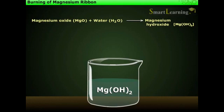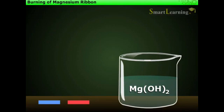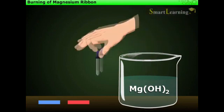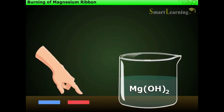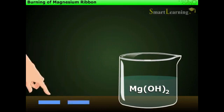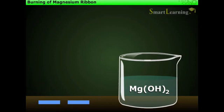To test the basic nature of the solution, that is magnesium hydroxide, let us perform an indicator test. Take red and blue litmus paper. Add two to three drops of aqueous solution on both papers. We observe that the red litmus paper turns blue, whereas there is no change on blue litmus paper. This proves that aqueous solution of magnesium hydroxide is basic in nature as it turns red litmus paper blue.